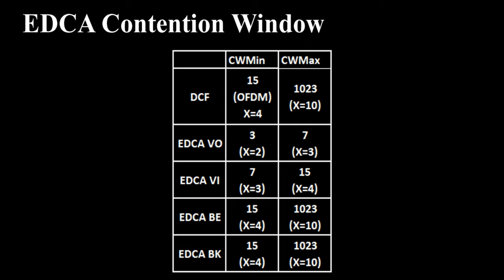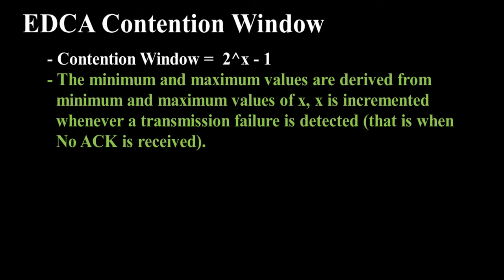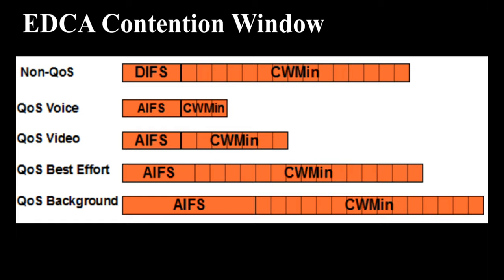EDCA Contention Window. The maximum and minimum values of the contention window are dependent on the type of data. The values of contention window min and contention window max are shown in slots. The contention window can be derived from the formula 2^x minus 1. The minimum and maximum values are derived from minimum and maximum values of x. x is incremented whenever a transmission failure is detected, that is when NOAC is received. As a result of the modified wait period, voice traffic has the highest probability of accessing the medium.